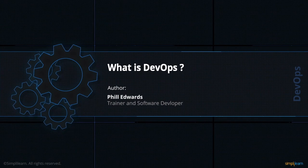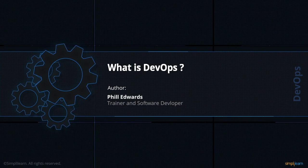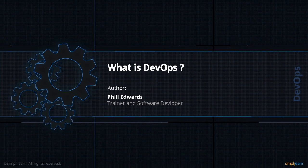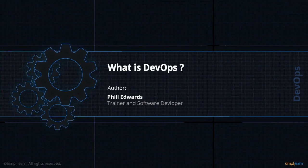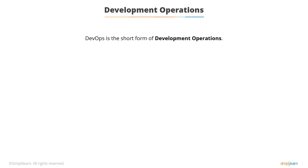So what is DevOps? We're first of all going to find out what this actual term means. DevOps is short for development operations. It focuses on collaboration between developers and other roles.